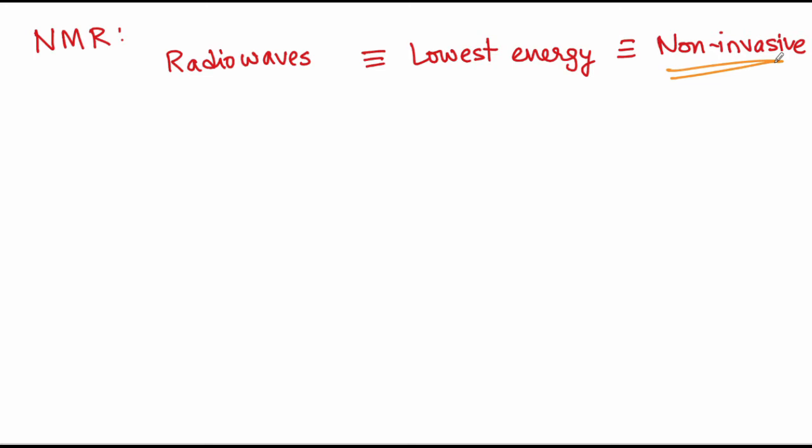What are the features of NMR therefore? NMR uses radio waves. Since they are of the lowest energy, they are non-invasive in nature. Non-invasive implies that when you end up using your sample to do NMR, you will actually get the sample back without any changes.